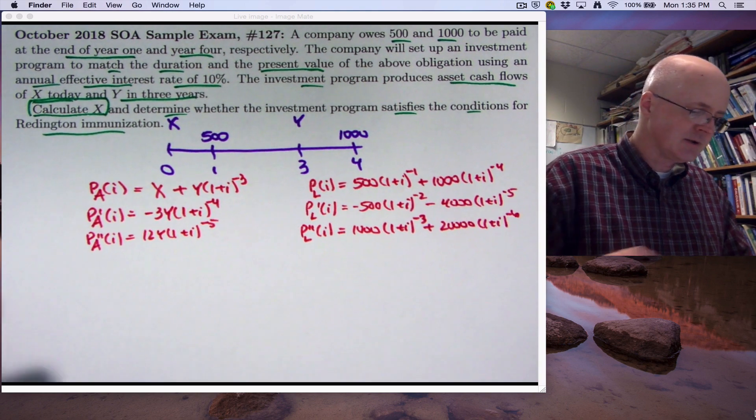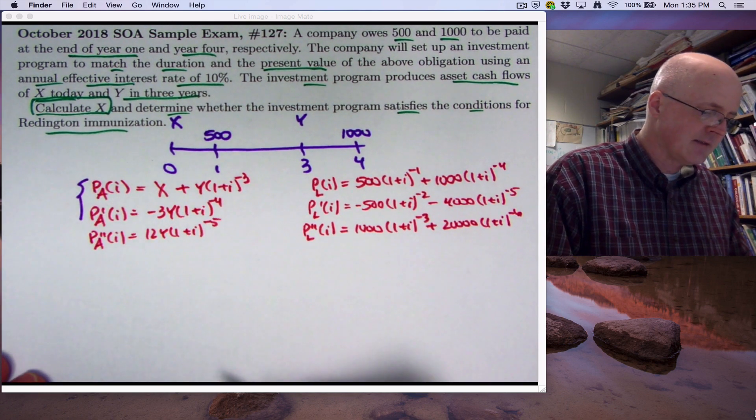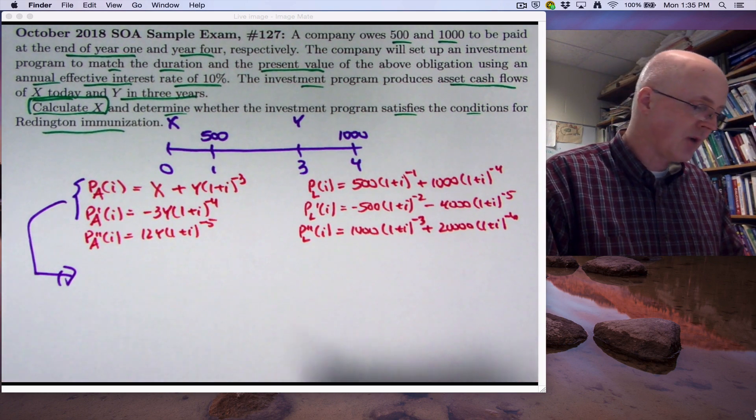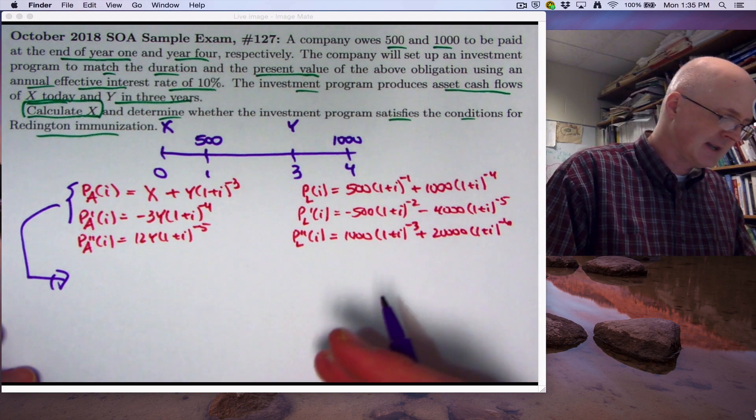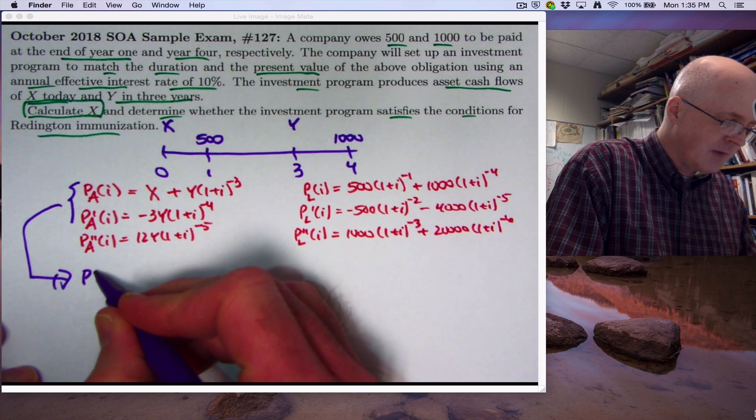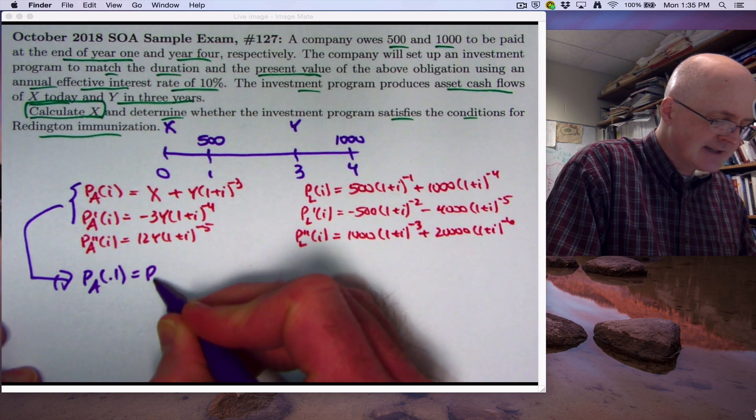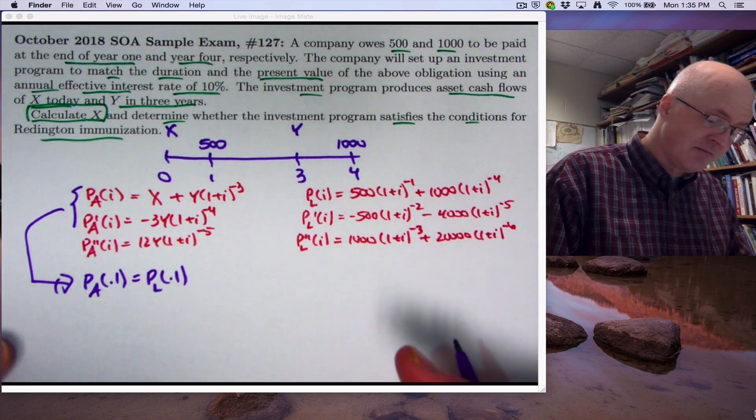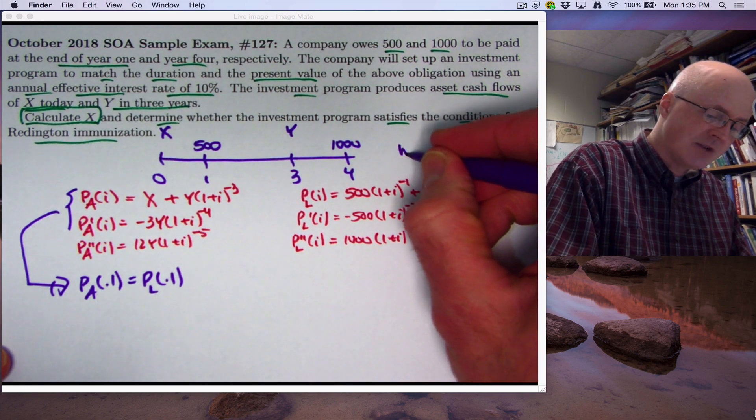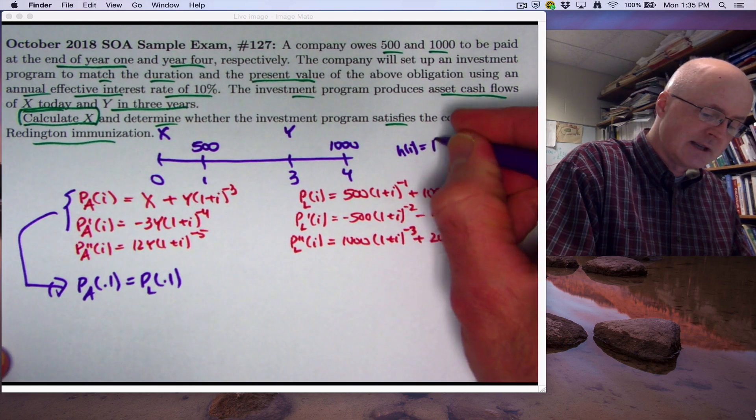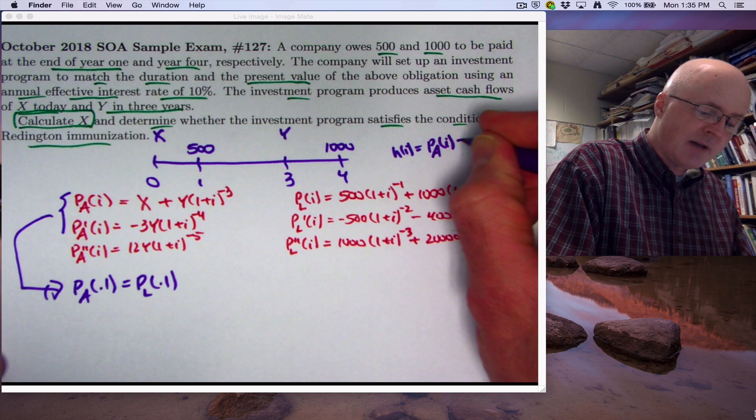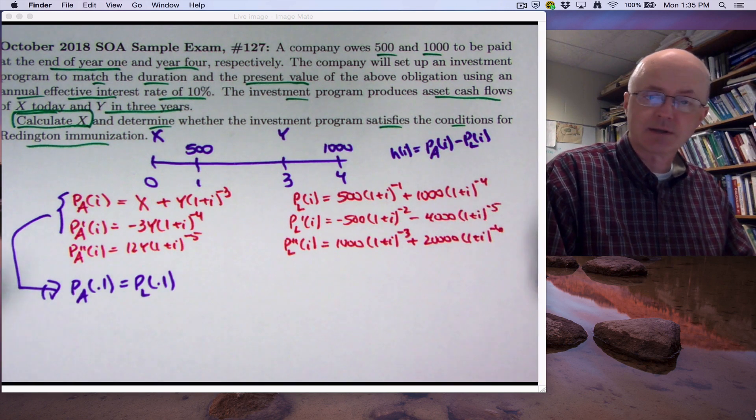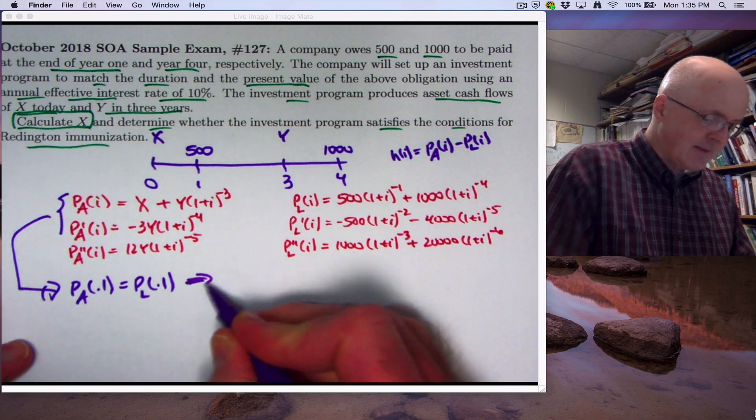All right, so we've found our derivatives. Now we need to use the first couple, the functions and their derivatives, to solve for x and y. We only need x as far as the problem statement goes, but we will need y to help us solve for x. Plugin i equals 0.1. So matching these present values for the assets and liabilities produces this equation. As I mentioned in the first couple videos, I could also think about the difference function. I call it h of i when we're thinking about present values, just like Broverman's book does. Thinking about that as a difference, p a of i minus p l of i, and I could differentiate that as well and decide whether the set that function and its derivative equal to zero at i equals 0.1 instead of this. That's another way to think about it.